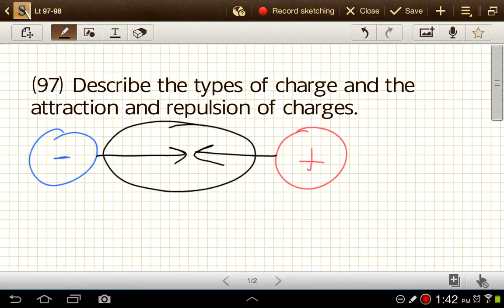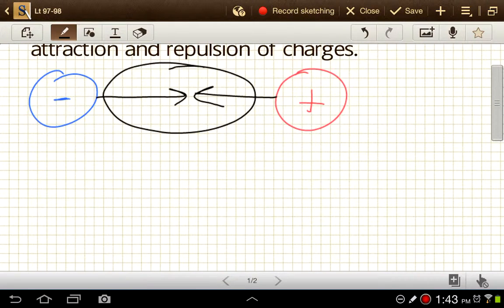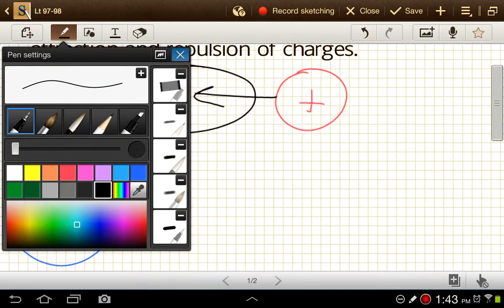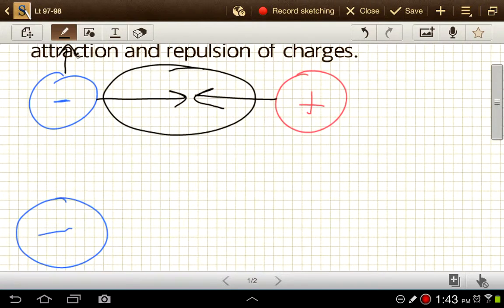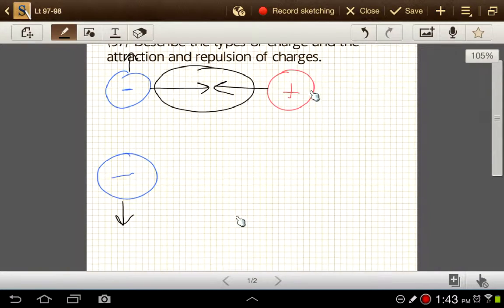So each charged object here experiences a force toward each other that's equal in magnitude, opposite in direction. Now, those are opposite charges. We have one positive and one negative, so those are attractive to each other. But if we had, say, two negatives, then those would be repelling each other. So we have a force away from one another, and I made this a little bit too big. Let's zoom out so we can see the whole thing.